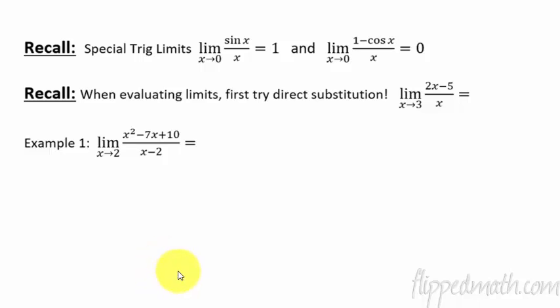So let's recall some things. First, special trig limits. You remember we had a limit as x approaches zero of sin(x)/x that equals one. And then if we have (1-cos(x))/x, that limit as x approaches zero equals zero.